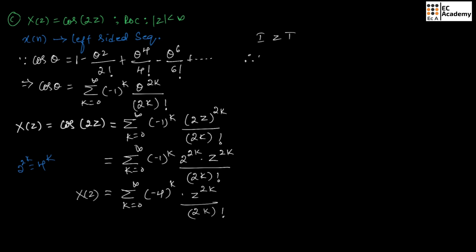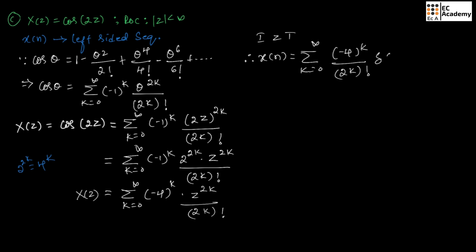Taking the inverse Z-transform, X of N can be written as summation of K from 0 to infinity of (minus 4) to the power K divided by (2K) factorial, times delta of N plus 2K. This is X of N for the given X of Z.